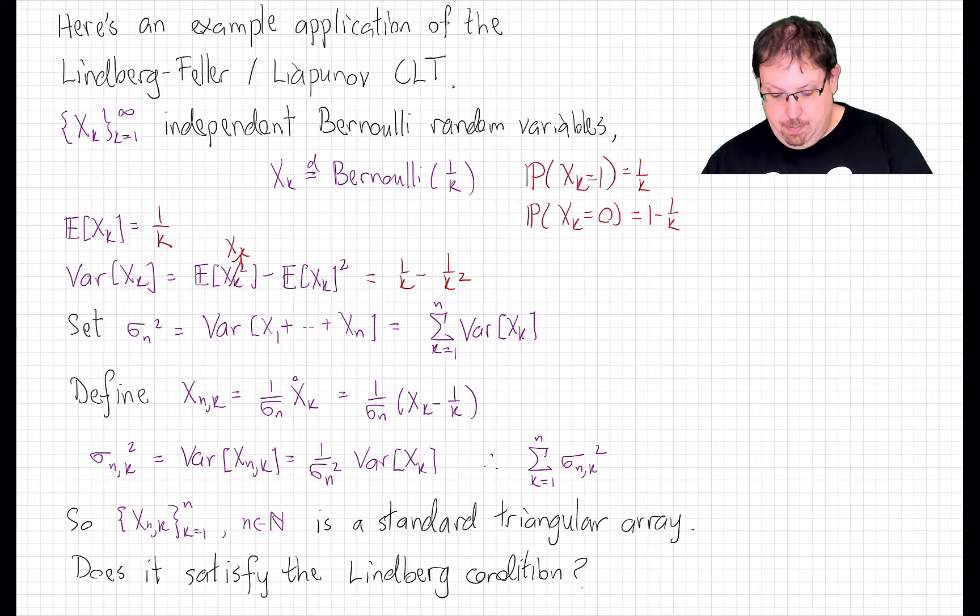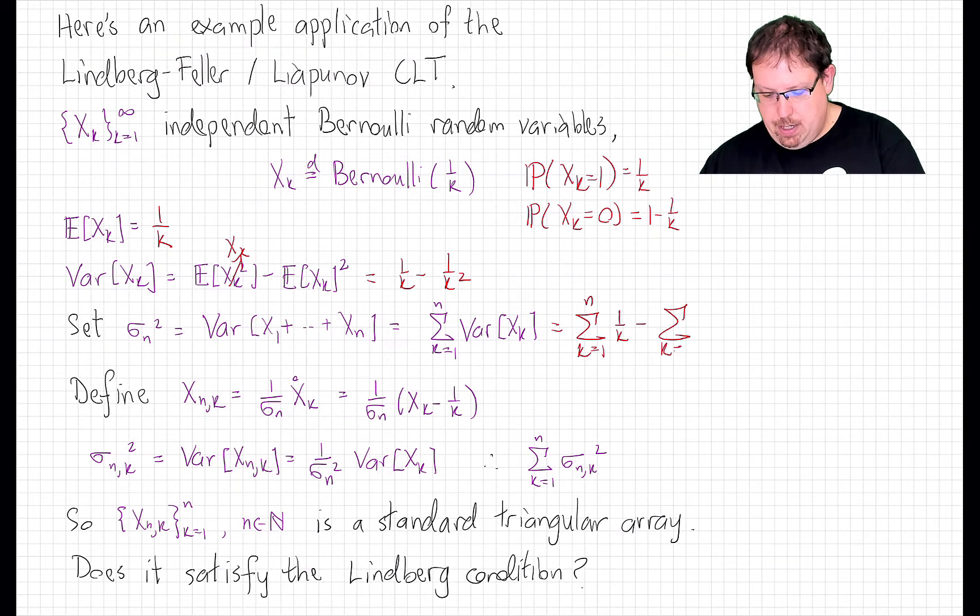They're independent, so that's the same thing as the sum of their variances, and so that's the sum k going from 1 up to n of 1 over k minus the sum k going from 1 up to n of 1 over k squared.